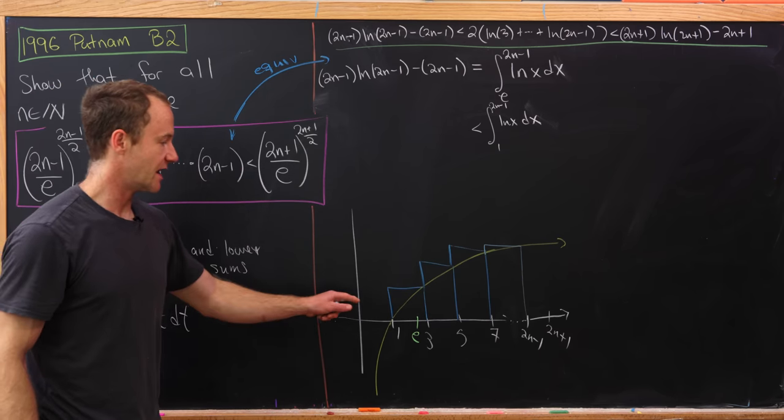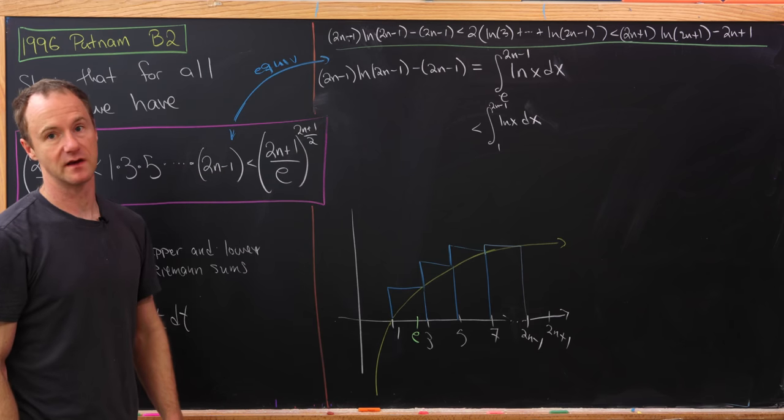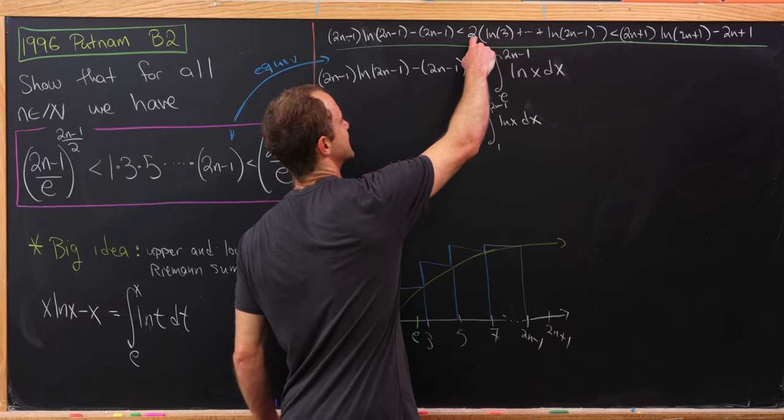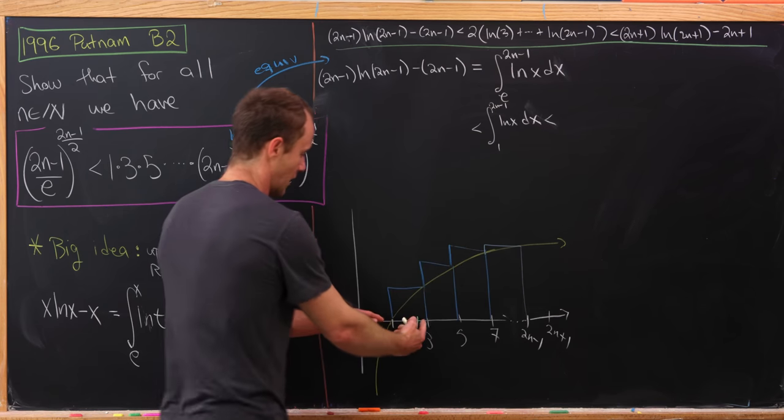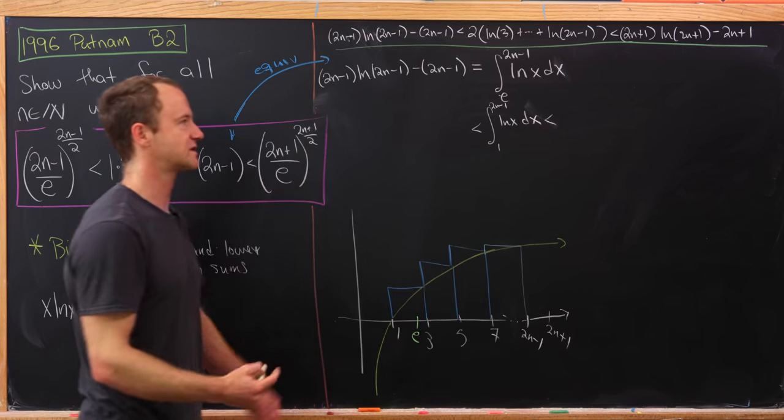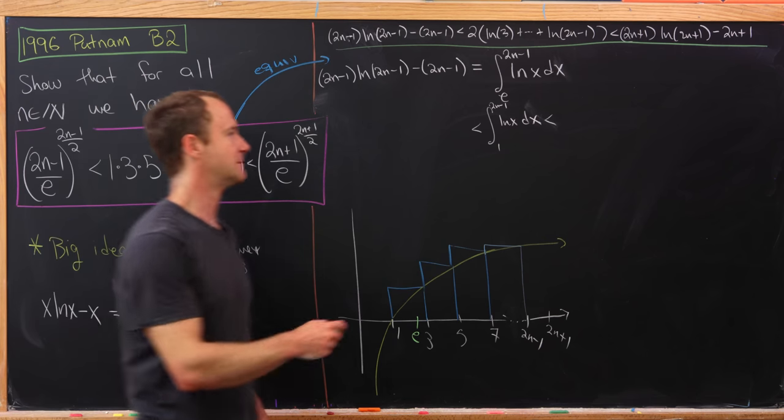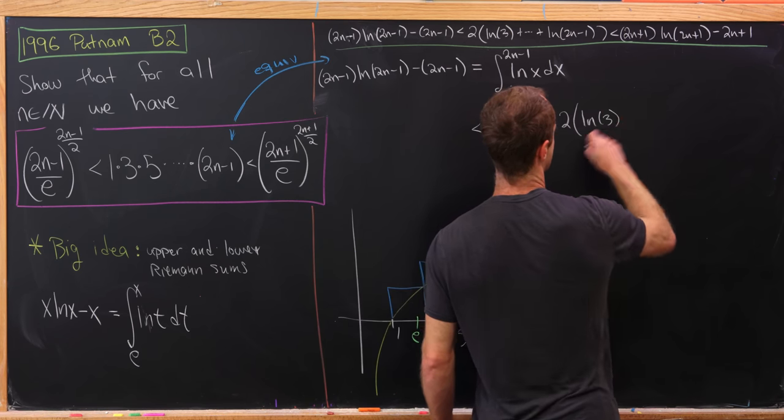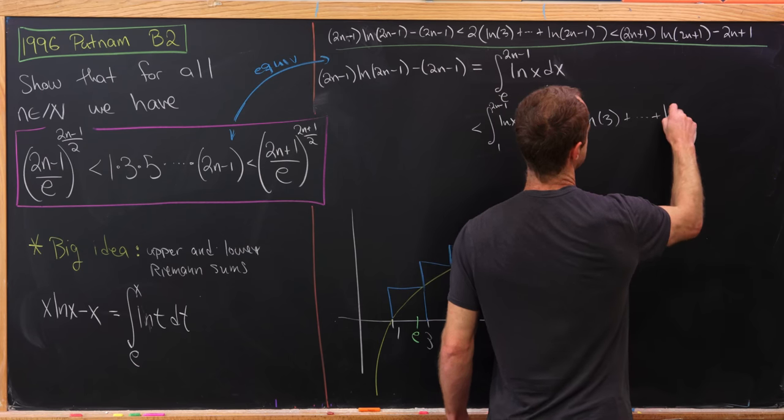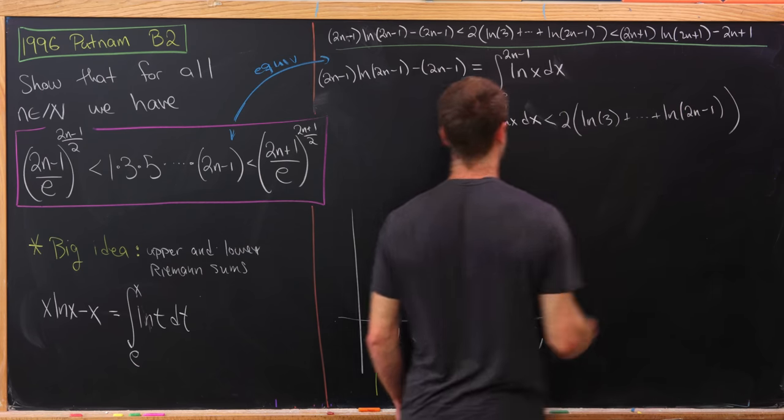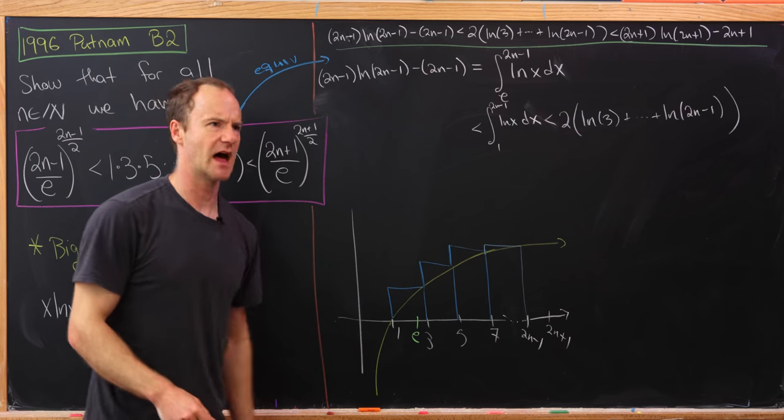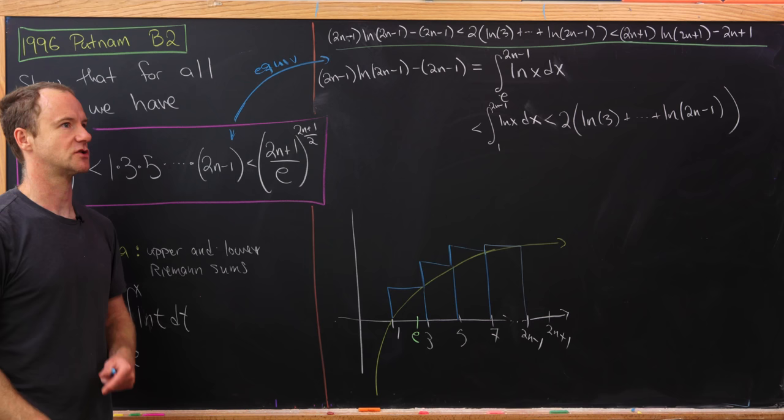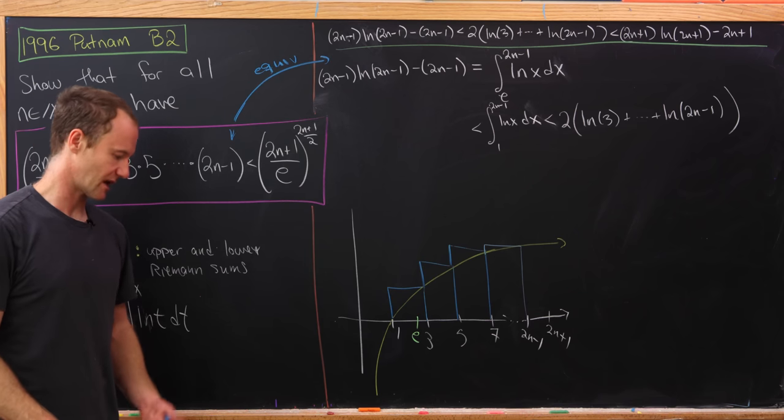Okay, so like I said, these rectangles are going to overestimate the integral. But they're also going to exactly give us this object right here. Because we've got a width of 2 and then the corresponding heights all match up. So this, in turn, is going to be less than 2 times the natural log of 3 plus all the way up to the natural log of 2n minus 1. And like I said, that's from that approximation by rectangles. I guess we really needed the fact there that the natural log was an increasing function to make that work.